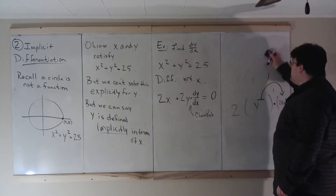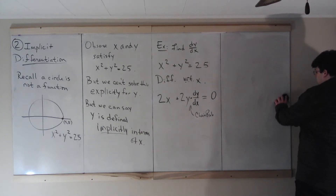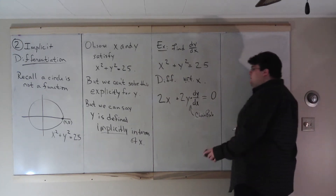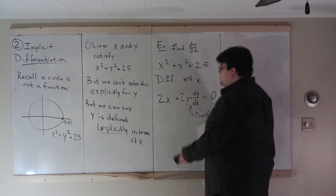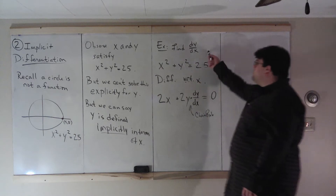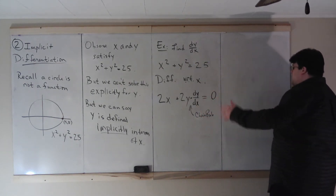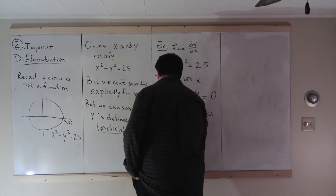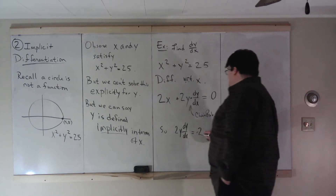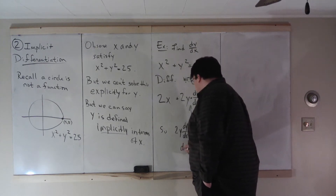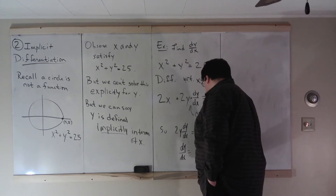We can think of that y as having a bunch of x's inside. A summary of what we're doing: take the derivatives of everything as you would expect, and then whenever you have a y, throw a dy/dx on it by chain rule. Our goal is to find dy/dx — and it's right there. So we solve for it: 2y · dy/dx = -2x, divided by 2y gives dy/dx = -x/y.